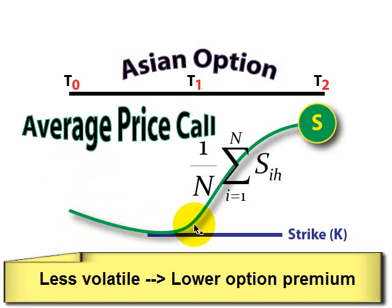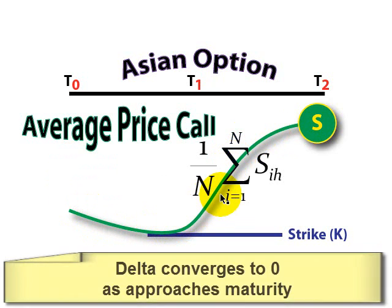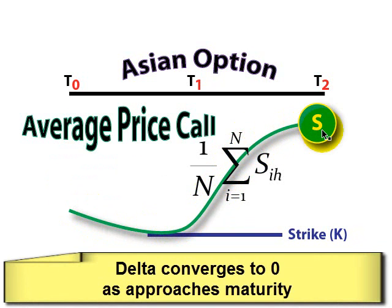A second benefit, owing to this smooth averaging effect, is that it's easier to delta hedge the option. In fact, as the option approaches expiration or as maturity shortens, the delta on the option approaches zero — so it's easier to delta hedge the Asian option.